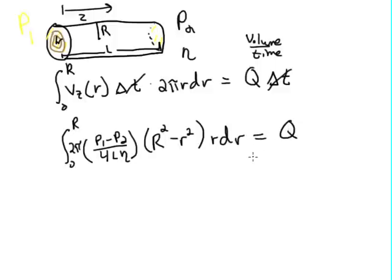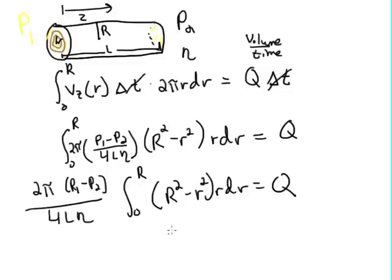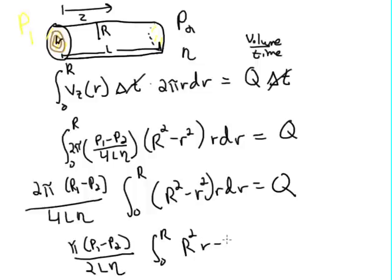This equals Q. We can pull out all the constants to get 2π(P1 − P2)/(4Lη) times the integral from 0 to R of (R² − r²)r dr. Multiplying through by r gives us the integral from 0 to R of (R²r − r³) dr, which equals Q.